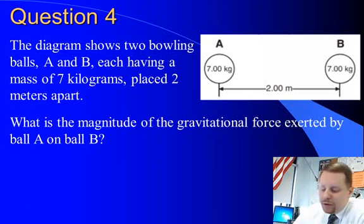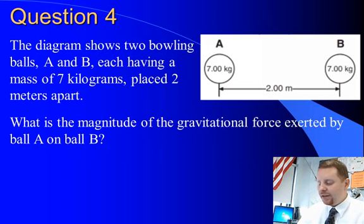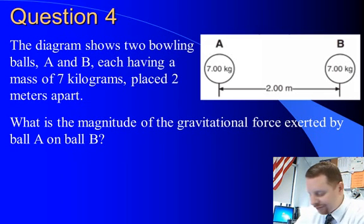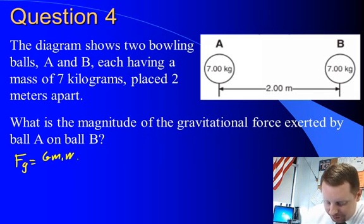Number four, we have two bowling balls, A and B, each having a mass of 7 kg, placed 2 m apart. Find the magnitude of the gravitational force exerted by ball A on ball B. Straightforward Newton's Law of Universal Gravitation problem. We write our equation first, then we substitute in with units.